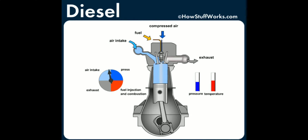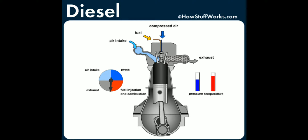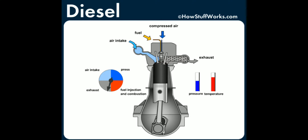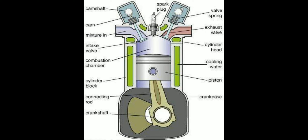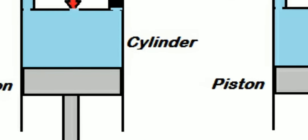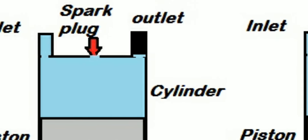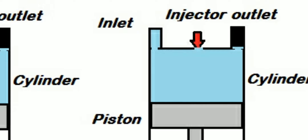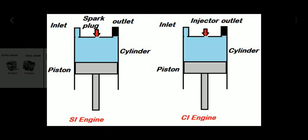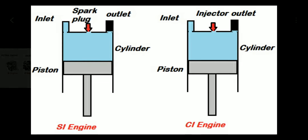So now you can clearly understand the difference between a diesel engine and a petrol engine. The petrol engine comes with a spark plug, but in the case of the diesel engine an injector is present — there is no spark plug. Thank you for watching.